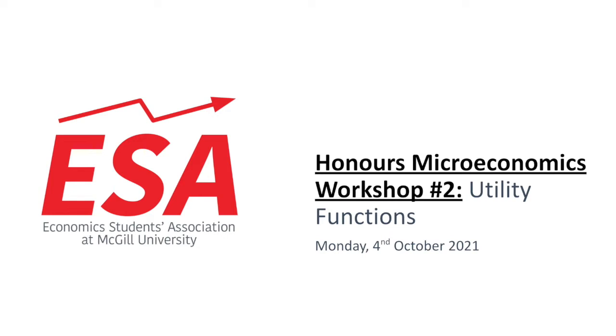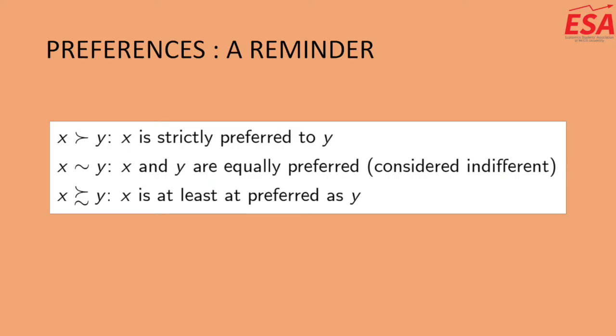The first thing we'll cover again is consumer preferences. As a reminder, preferences describe how a consumer ranks all of his or her possible consumption bundles. We're going to see two primary forms of notation: weak preferences, which means one good is at least as good as another, and strict preferences, meaning one good is always better than the other. Indifference is the middle notation and applies when the two goods are equal in the eyes of the consumer.